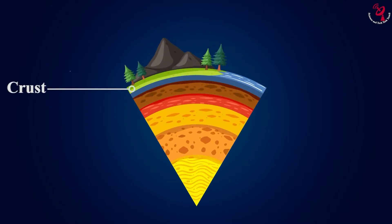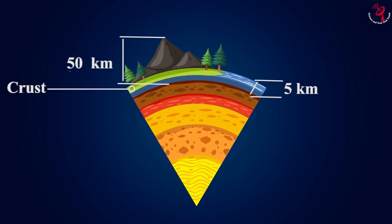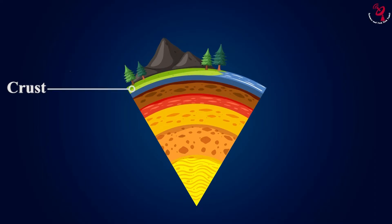Crust. This is the top layer on which we live. All the mountains, jungles, and oceans are made of this layer. It is the thinnest layer of the four layers. This layer is 70 kilometers thick on land, and 5 kilometers thick at some ocean floors. This layer is a combination of several plates, called tectonic plates.